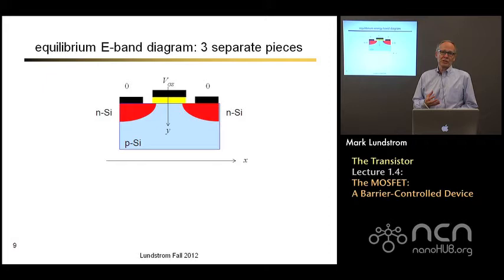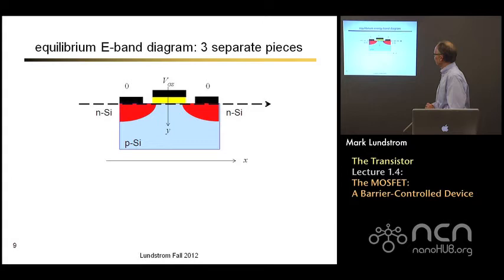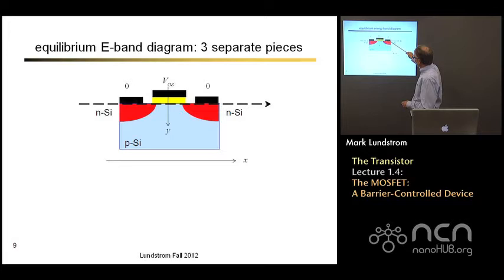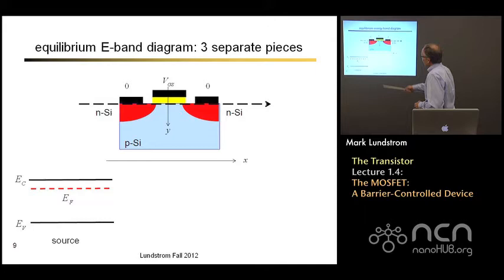Now we're ready to draw an energy band diagram for the MOSFET. This is a two-dimensional — actually three-dimensional — device, with another dimension coming out of the board for the width. To get an idea of what's going on, we'll draw the energy band diagram in one direction at one location: across the top surface from the source, underneath the gate, across the channel, and out the drain. Plotting that energy band diagram along that surface will give us a lot of insight into how this device operates.